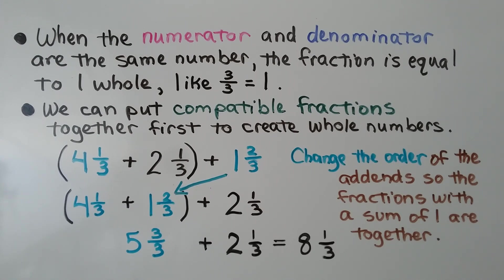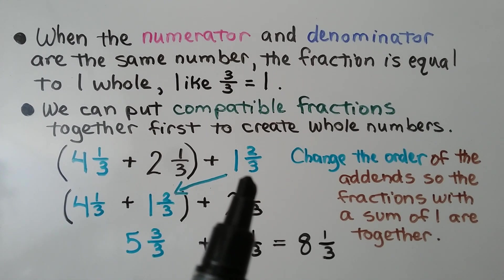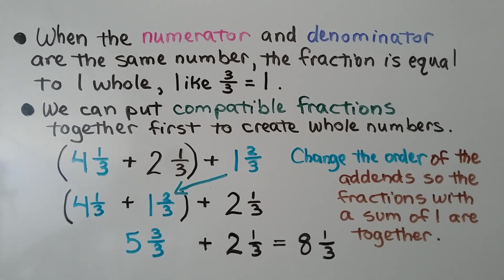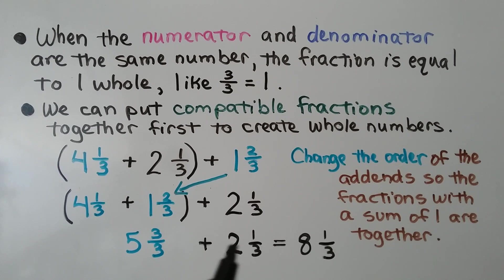When the numerator and denominator are the same number, the fraction equals 1 whole — like 3 thirds equals 1. We can put compatible fractions together first to create whole numbers. We have 4 and 1 third plus 2 and 1 third plus 1 and 2 thirds. We change the order of the addends and bring the 1 and 2 thirds to the middle so the 1 third and 2 thirds are together. That's 3 thirds, which is 1 whole. We have 4 plus 1 equals 5, then 5, 6, 7, and we get 8 and 1 third.